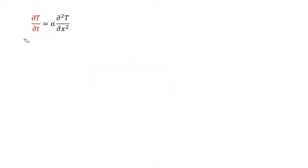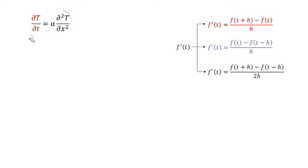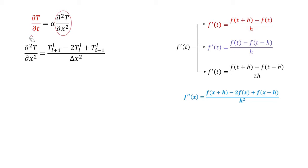This is the main governing equation and we want to solve it using the finite difference method. That is, we are replacing the differential terms such as del T by del t and del squared T by del x squared using simple difference approximations. The term on the left hand side, del T by del t, is a first order derivative term. Recalling our first lecture, we derived three different approximations: forward difference, backward difference, and central difference approximation. The second order term on the right hand side uses central difference approximation, expressed in terms of temperature data at nodes i, i plus 1, and i minus 1.